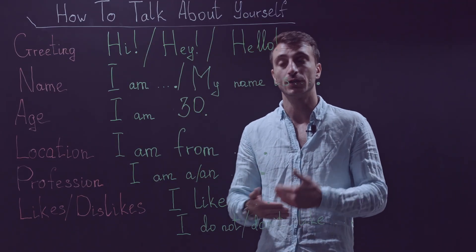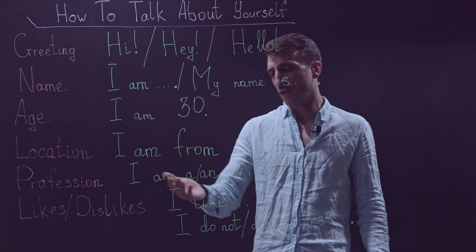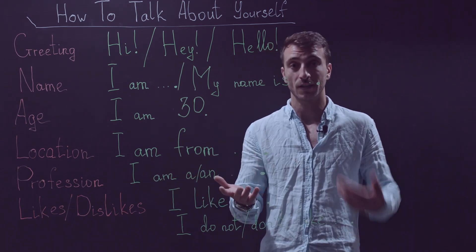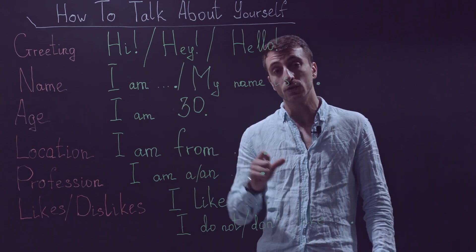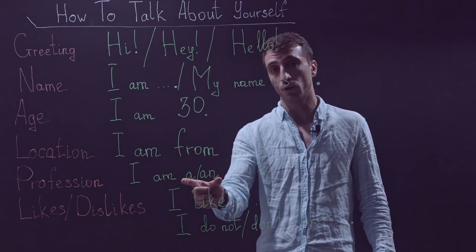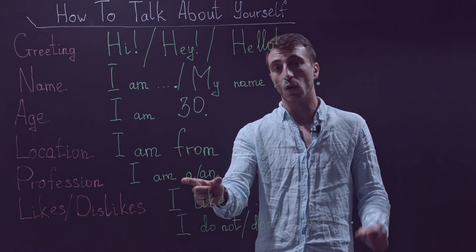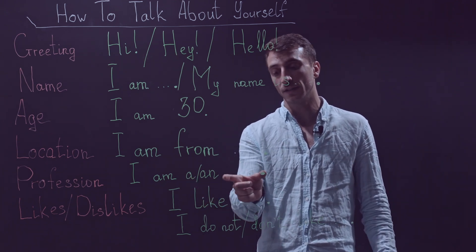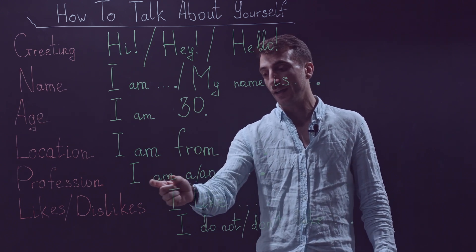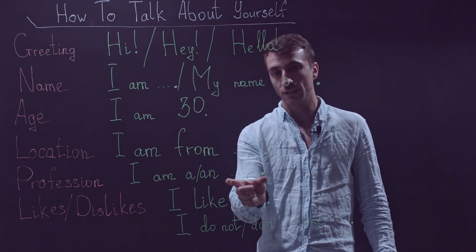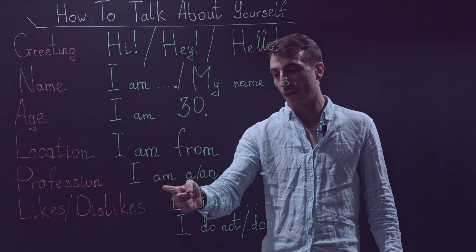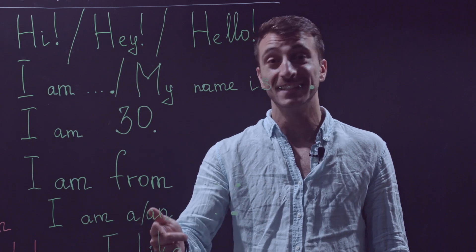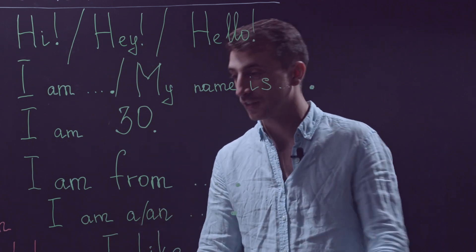Next is your profession — the thing that you do. For example, you could say: I am a teacher, like me. This is a very important part: you should always use 'a' or 'an' depending on the next word. I am a teacher. I am a doctor. I am an engineer.